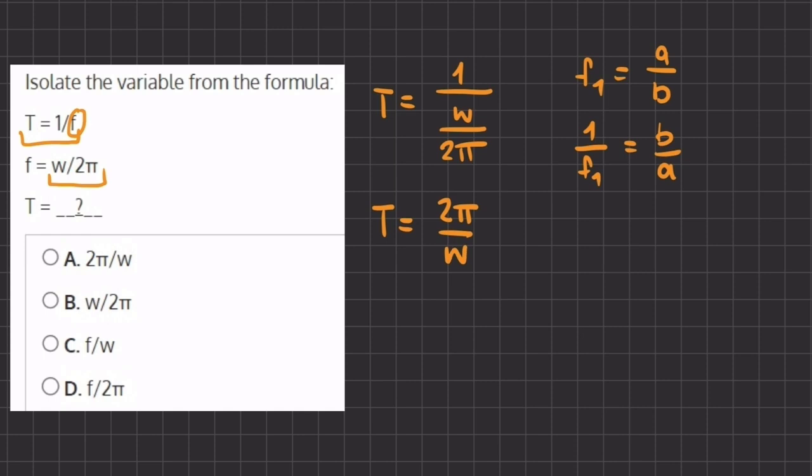And so 2 pi divided by W corresponds to answer A, and therefore will be our final answer.